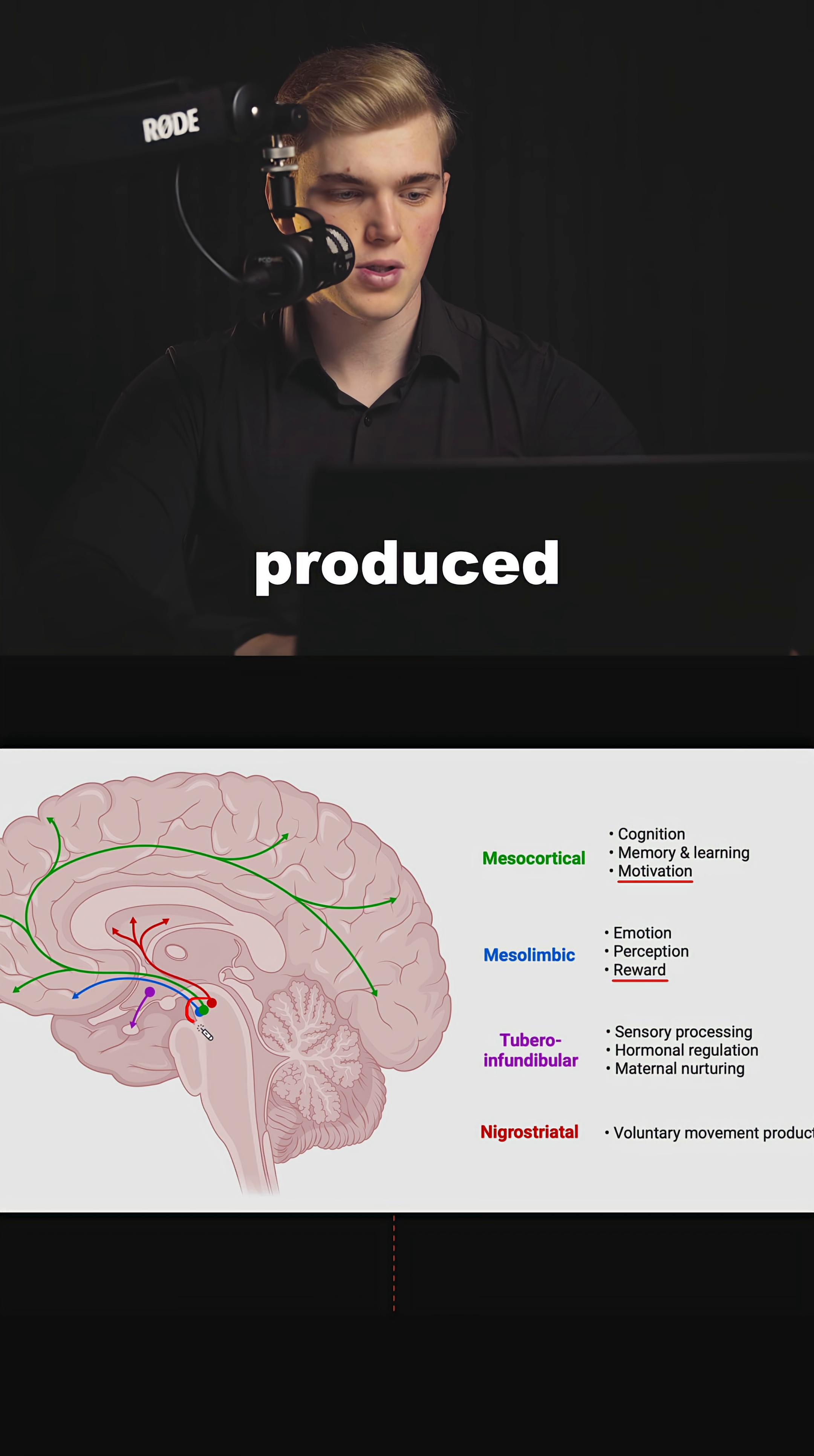So dopamine gets produced right here. This is your midbrain and your cortex, primarily your frontal cortex. So the mesocortical pathway, it's a connection between your midbrain where dopamine is produced and then it gets sent to your frontal lobes.